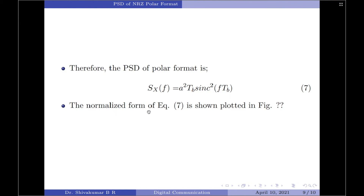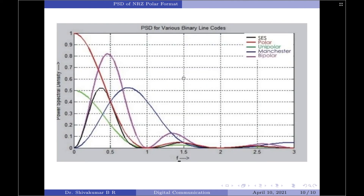We will now see the normalized form of this equation in the diagram. This diagram contains the normalized power spectral densities of polar, unipolar, Manchester, and bipolar formats. Currently we are discussing polar, highlighted by the red colored curve, which represents the normalized version of the power spectral density of NRZ polar format. That concludes the discussion on the PSD derivation for NRZ polar format. If you like this video, please press the like button and subscribe for more videos on digital communication. Thank you for watching, have a good day.